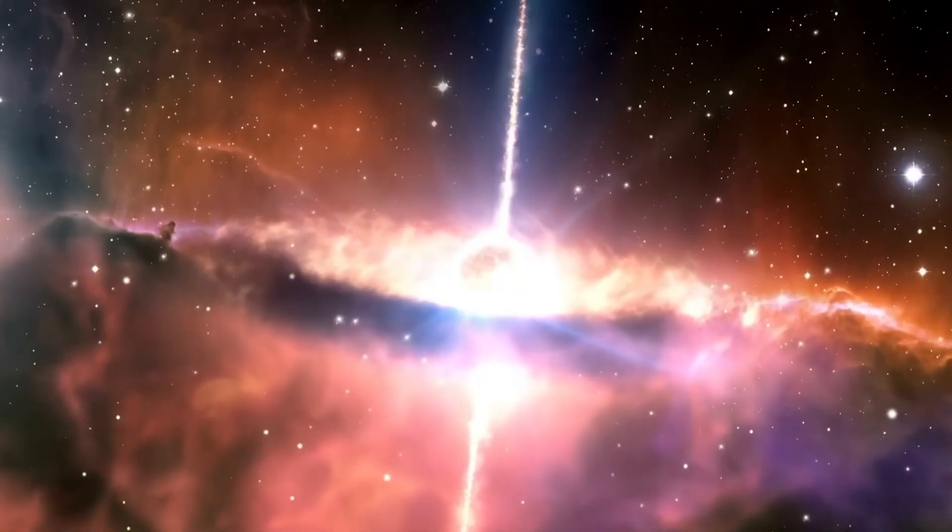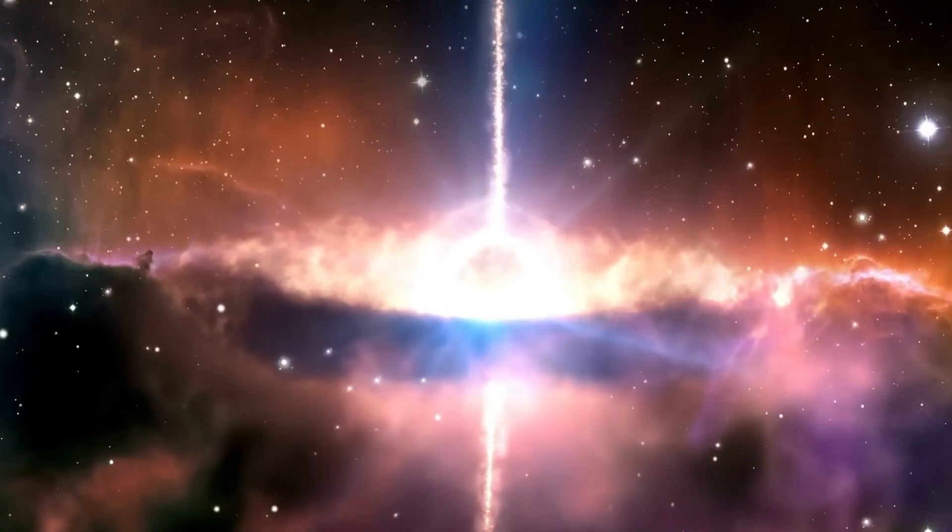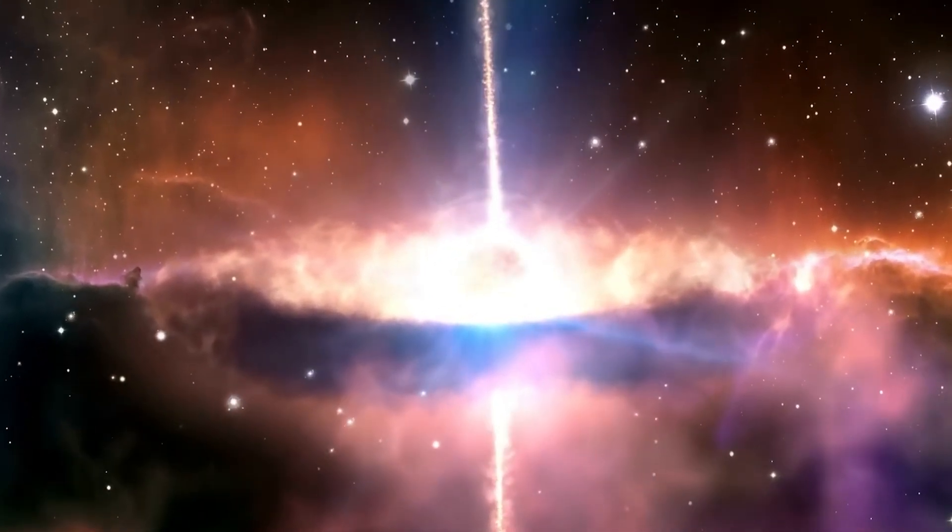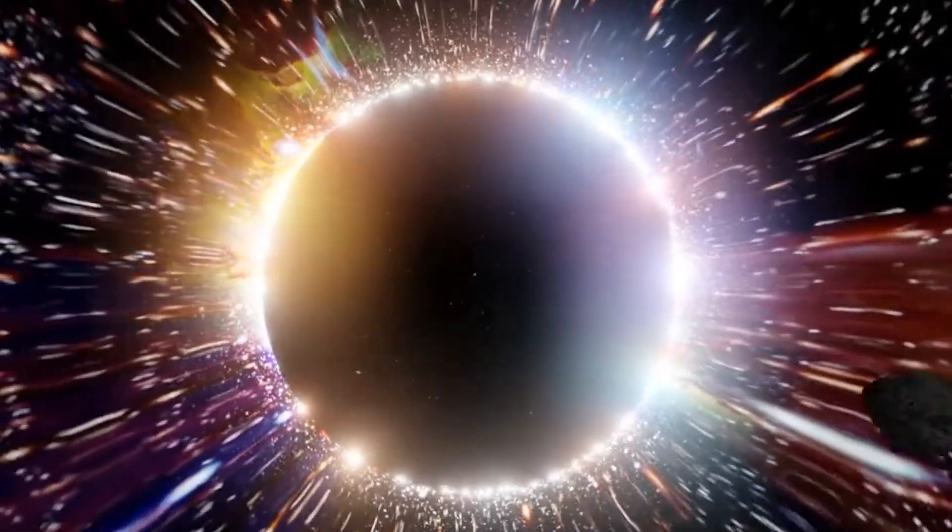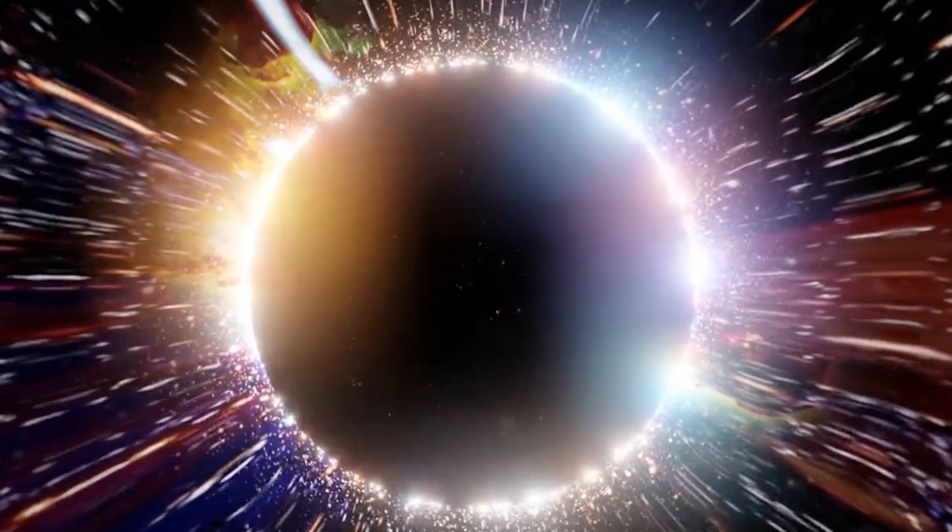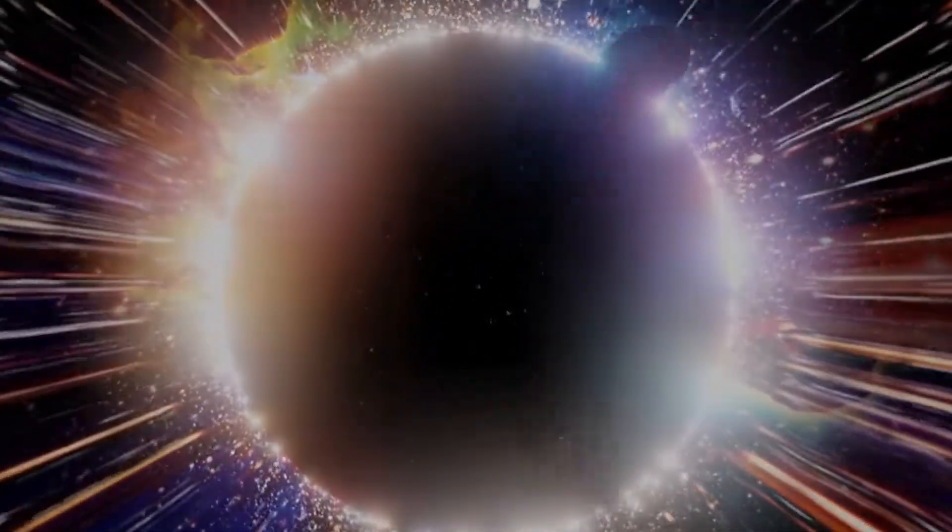However, in the vicinity of a black hole, there is often a disk of material such as gas or dust concentrated by its immense gravity. This material heats up as it spirals toward the black hole, emitting X-rays and other types of radiation, creating a luminous ring known as a corona.